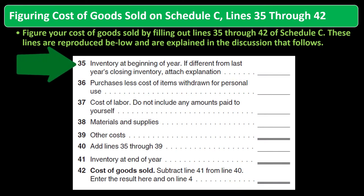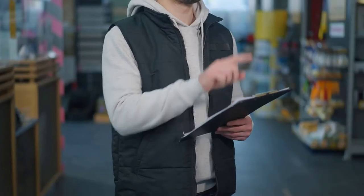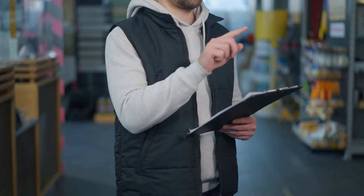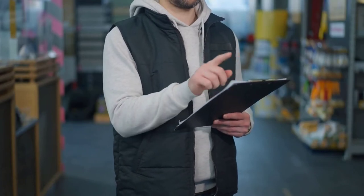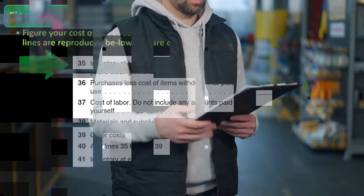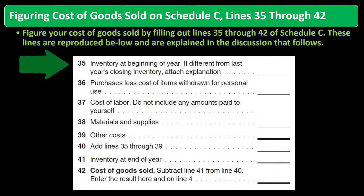Line 35: Inventory at the beginning of the year. If different from last year's closing inventory, attach an explanation. The beginning inventory should be the same as the ending inventory on your Schedule C tax return from the prior year, unless there is some exception.